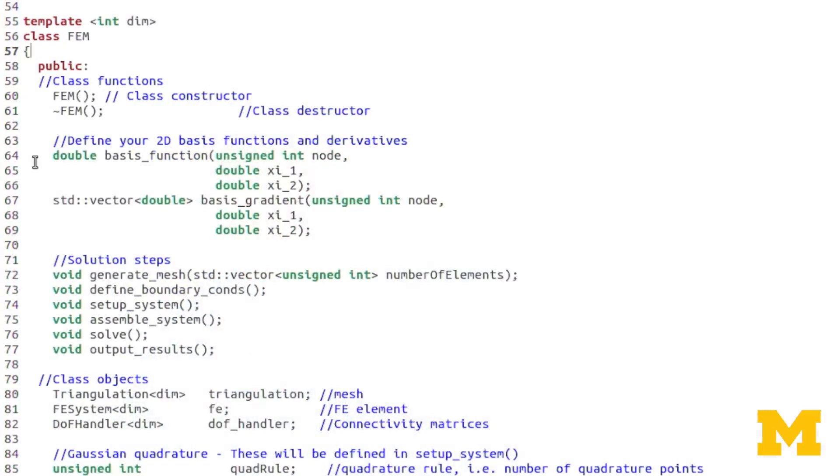Now let's look at basis function and basis gradient. There are a couple of differences here. First off, we have more inputs. We still have the node number, but now we have xi1 and xi2. Obviously we have two coordinates since it's a 2D problem. Also with basis gradient, instead of returning just a double, since we are 2D, the gradient is a 2D vector. And so I'm returning a standard vector of doubles.